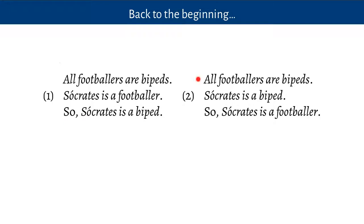If you look at this second argument, which starts with all footballers are biped, but now uses Socrates is a biped as a second premise and makes the conclusion Socrates is a footballer, you can see that argument isn't quite so good. It doesn't have to be that Socrates is a footballer if all footballers are bipeds and Socrates is a biped. Maybe Socrates is a biped who doesn't like playing football.